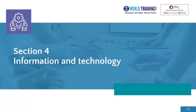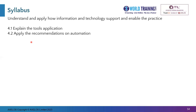We are in section 4, the information and technology dimension of this practice. The exam syllabus for this is to apply and understand how the information and technology supports and enables the practice of change enablement. We will be specifically looking at the automation tools and the recommendations for automation.